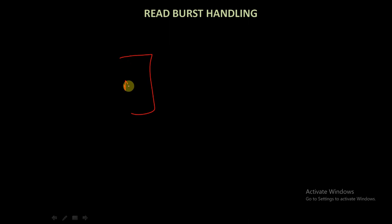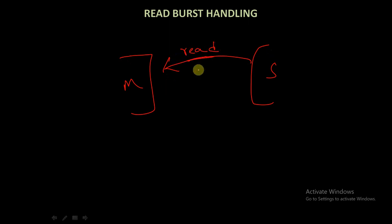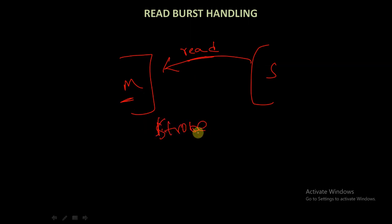Read burst handling: the master also has flexibility to discard read data. When the master is receiving data in a read operation, it has the ability to disable further data items from the slave, but it must accept the read data initiated at the beginning and fully complete those transfers before disabling further reads using the strobe signal. Similar to write burst, the master needs to complete the remaining transfers within the burst. This concludes part 1 of the burst operations in AXA protocol, covering AW length, AR length, write burst handling, and read burst handling.